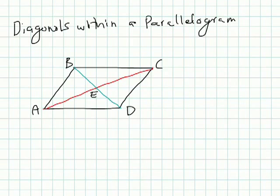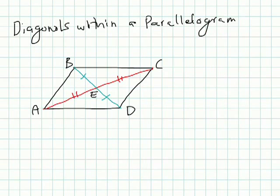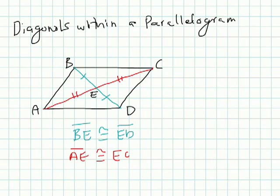The next theorem states that when you have diagonals within a parallelogram, the diagonals bisect each other. Bisect means the two segments on each side will be equal. So AE is congruent to EC, and BE is congruent to ED.